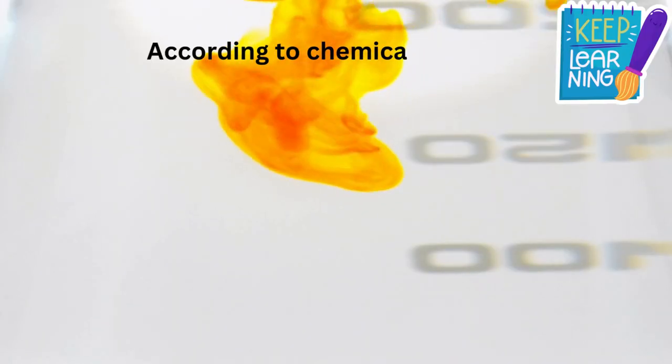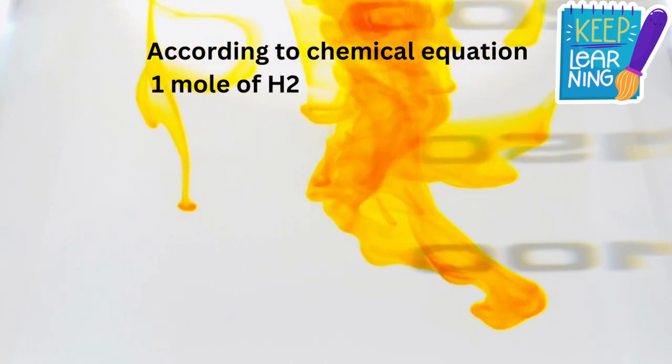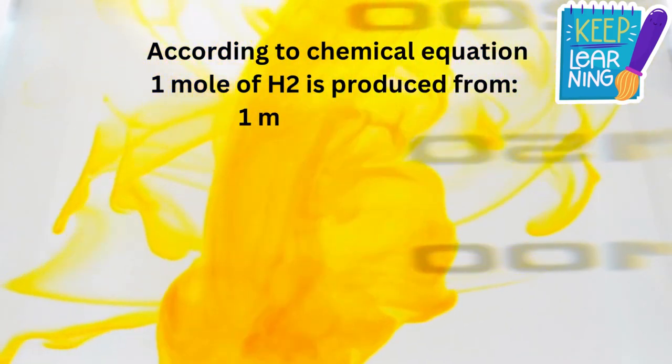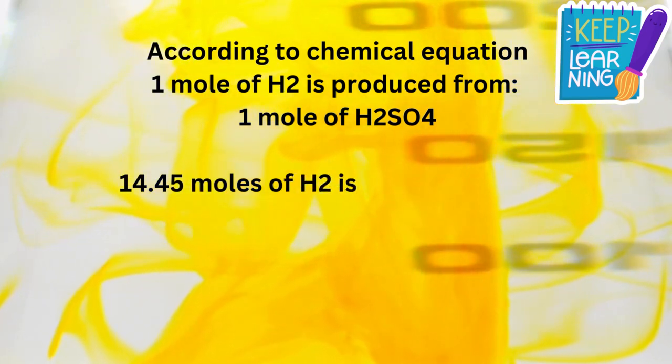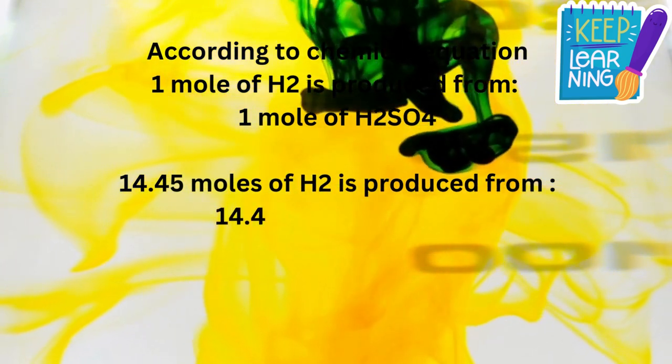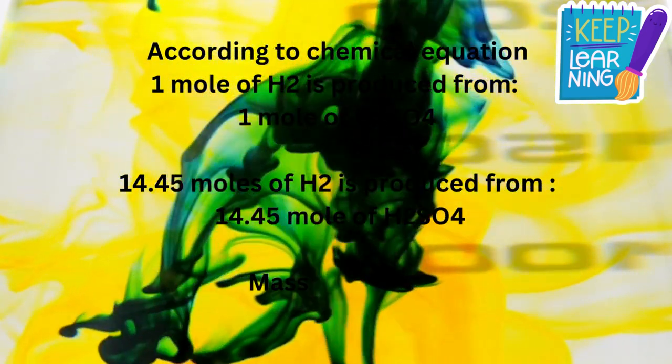According to the chemical equation, we know that 1 mole of H2 is produced from 1 mole of H2SO4. 14.45 moles of H2 is produced from 14.45 moles of H2SO4.